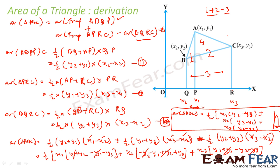That is the area of the triangle — the whole expression is under 1/2. Hence, we derived the area of the triangle in terms of coordinates (x1, y1), (x2, y2), and (x3, y3). We took three trapeziums: area of triangle = trapezium 1 + trapezium 2 − trapezium 3, solved it, and got the answer.